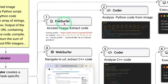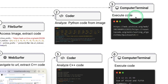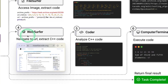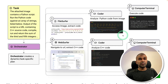You can see here: first it goes to the file surfer to read the image, then the coder writes code to understand the image, it executes the code to produce an output URL pointing to an archive page. Then using the web surfer, it navigates to the URL and extracts the C++ code, analyzes it using the coder agent, and finally goes to the computer terminal to execute the code.